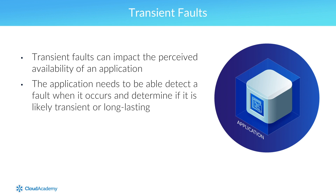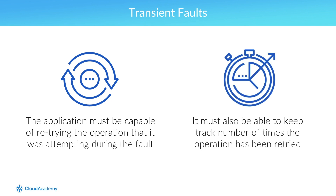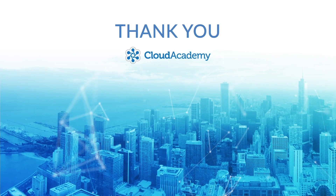Ensuring a cloud-hosted application can operate reliably means it must be able to detect a fault when it occurs, determine whether the fault is likely transient or more long-lasting, and retry the operation if the fault is transient while tracking the number of retry attempts. Applications that elegantly handle transient faults must use appropriate retry strategies. A retry strategy specifies the number of times the application should retry, the delay between each attempted retry, and what actions to take after a failed retry attempt.